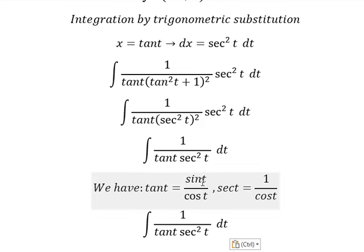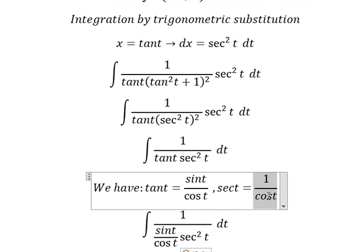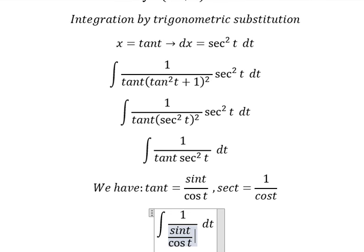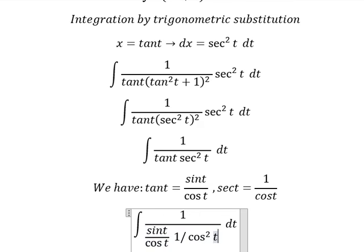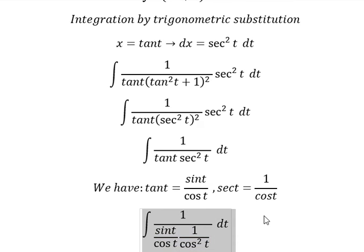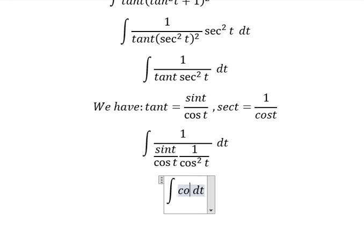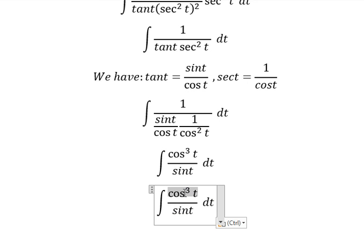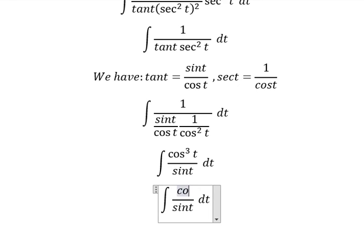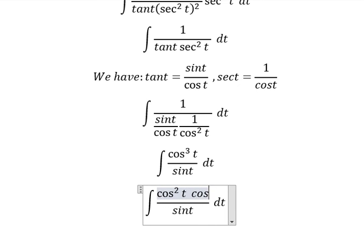Now I will apply these formulas. I will put cos t and cos t squared on numerator, and we have cos t to the power of 3. Next, about cos t to the power of 3, we can put cos t squared and cos t.